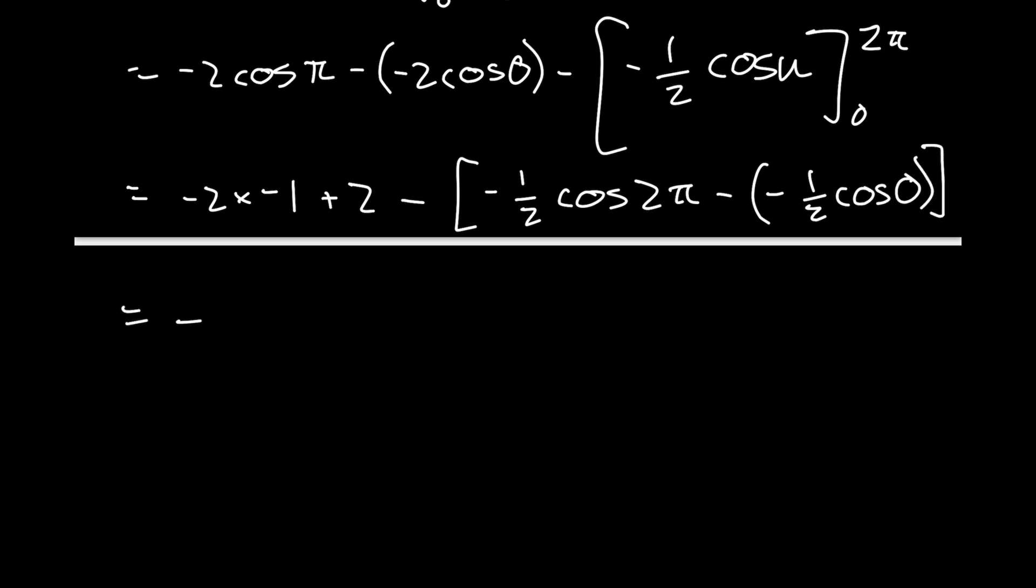We have 2 + 2 minus these brackets. Cos(2π) = 1, so we have -1/2 × 1 = -1/2. The negative times negative gives positive. Cos(0) = 1, so 1/2 × 1 = 1/2.